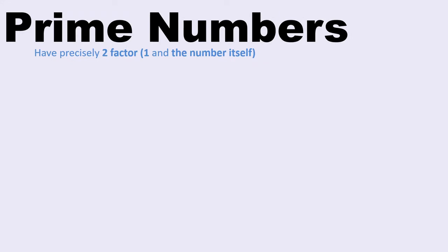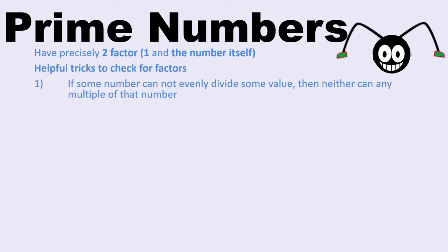We'll get back to finding factors in a minute, but let's now look at prime numbers. As we've said before, prime numbers are the numbers that have exactly two factors — that's 1 and the number itself. You could go looking for other factors, but you won't find any. So prime numbers, rather than looking like spiders with legs with matching shoes, they actually look a bit more like aliens with antennae. Some helpful tricks to check for factors when you think a number's prime are as follows.